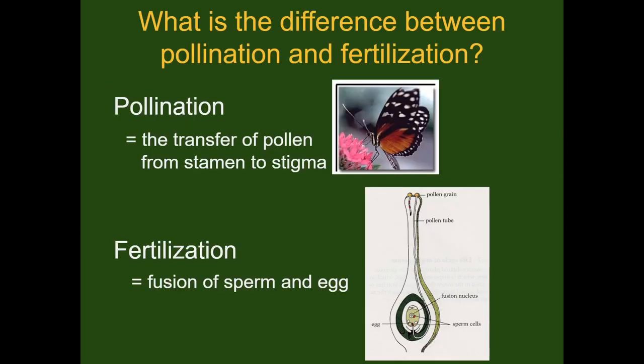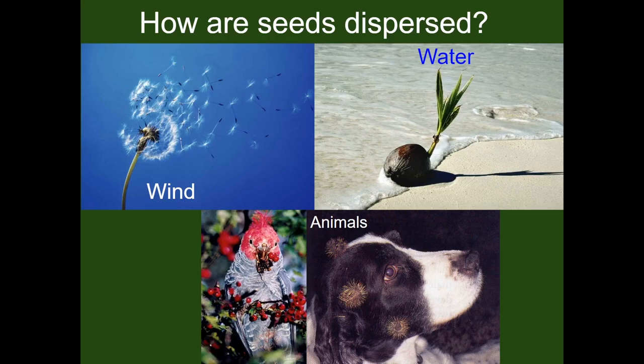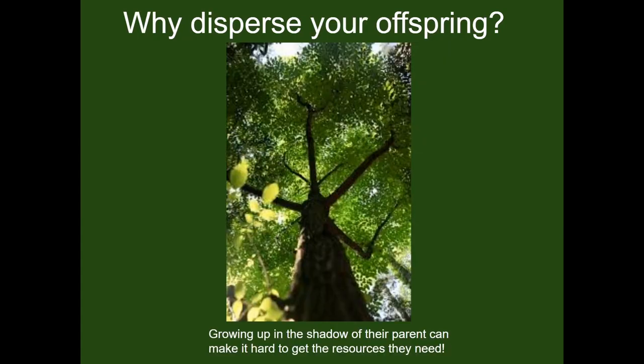Once pollination and fertilization take place, a seed or multiple seeds will form. So how do these seeds get dispersed? Wind, water, and through animal poop or even hitching a ride. Growing up too close to their parents would mean that they have to compete with their parents for resources — that's a big shadow.